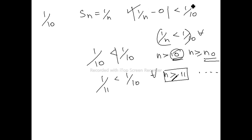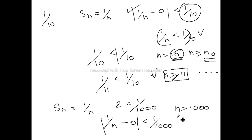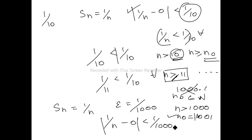In the same way, if epsilon = 1/1000, we need |1/n minus 0| < 1/1000, so n must be greater than 1000. Therefore n0 can be chosen as 1001. Note that you cannot choose n0 = 1000.1 because n0 must belong to the natural numbers. So n0 = 1001 is valid.